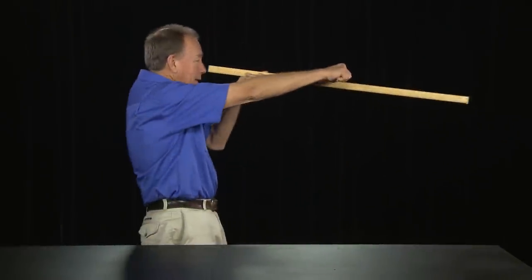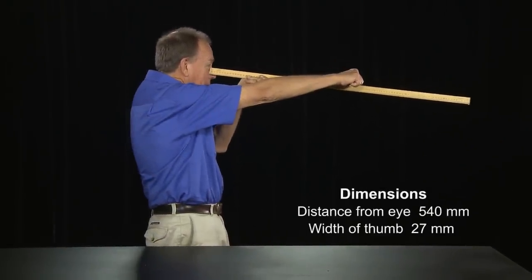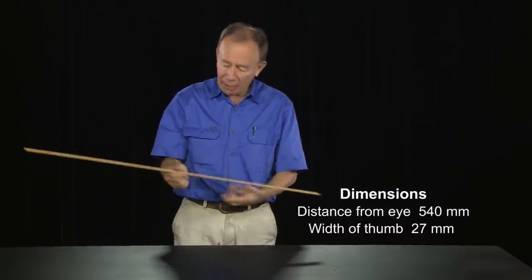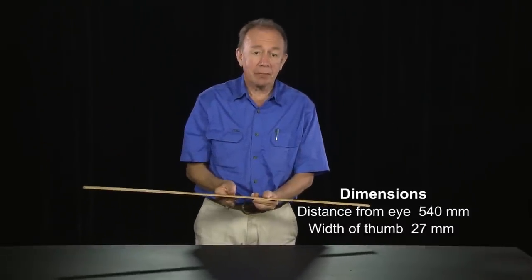If I hold my hand out like this, my thumb is 540 millimeters away from my eye, and my thumb is 27 millimeters wide.